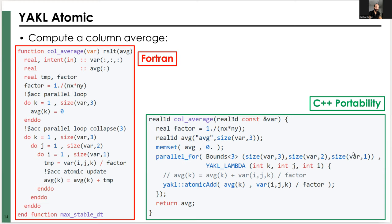Atomics happen when multiple threads have to write to the same memory location at the same time, typically in a partial reduction. For example, to calculate the column average of a variable, you sum up for each horizontal index at that column and divide by the number of columns — you'd use an atomic update. In C++, you use the atomic_add function, and one benefit is you can calculate a complex expression on the right-hand side in-situ, whereas in OpenACC you must assign to a temporary variable first.